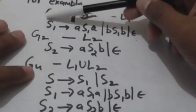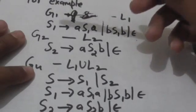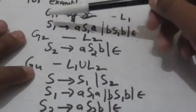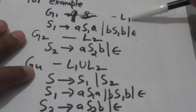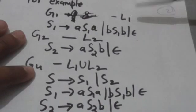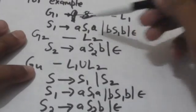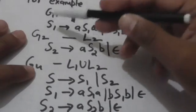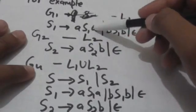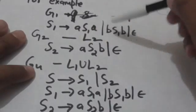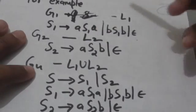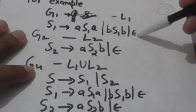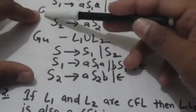Suppose there is a context-free grammar G1 whose language is L1. The productions in grammar G1 are: S1 derives A, S1 A; S1 derives B, S1 B; and S1 derives empty string.